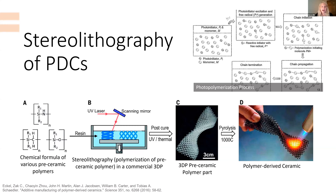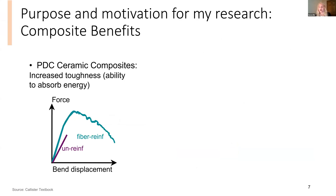Now that we've seen how polymer-derived ceramics can be made, we can look at how we use them — especially how we can combine them with other materials to improve their properties. That brings us to composites and their benefits. Simply put, composites are the combination of two dissimilar materials. We use them to take two different materials and combine their properties in order to increase that material's overall performance.